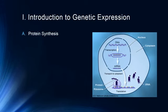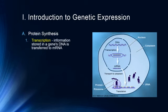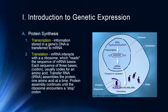Let's start with genetic expression. The primary function of DNA is in creating proteins — protein synthesis — accomplished through transcription: information stored in a gene's DNA is transferred to messenger RNA. The mRNA transcribes the information and translates it into proteins by interacting with a ribosome, which reads the sequence of mRNA bases. Each sequence of three bases, called a codon, usually codes for an amino acid. Transfer RNA assembles the protein one amino acid at a time until the ribosome encounters a stop codon.